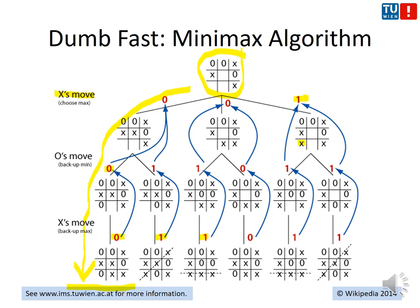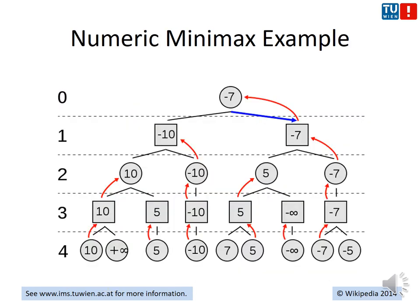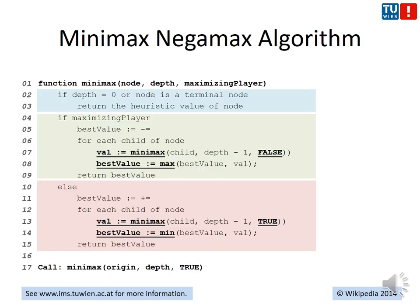Just to make it clearer with a numeric example: on the first level you pick the best option — maximum outcome. On the next level you switch perspective — your opponent picks what is best for them. At leaf nodes you do the evaluation, then propagate back up and identify the best strategy for you — if and only if you managed to go through the whole tree in the time given.